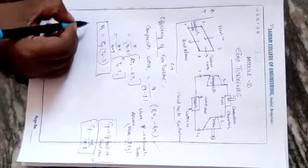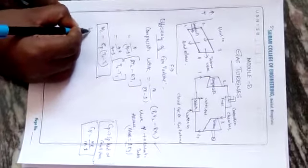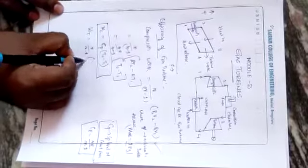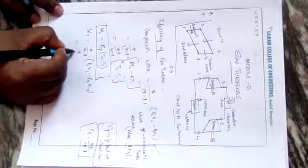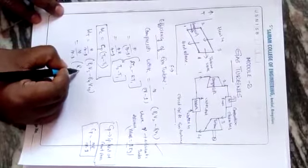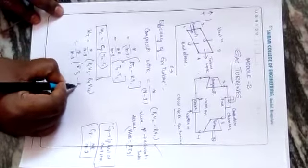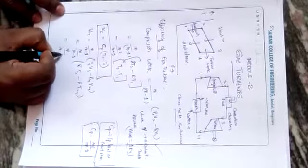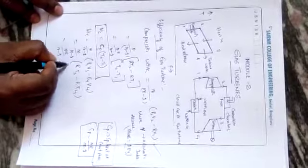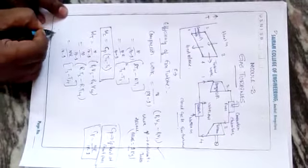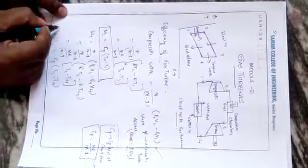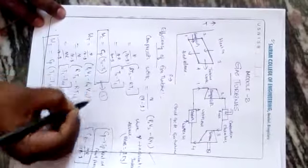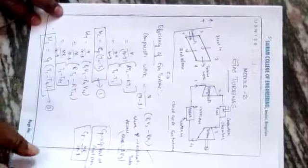Now let us see the turbine work — how much work is done by the turbine. In the same way, turbine work WT = γ/(γ−1) × (P₃V₃ − P₄V₄). This can be written as γ/(γ−1) × R(T₃ − T₄), taking R outside. So finally, WT = CP × (T₃ − T₄). Let us call the compressor work equation as equation 1 and the turbine equation as equation 2.